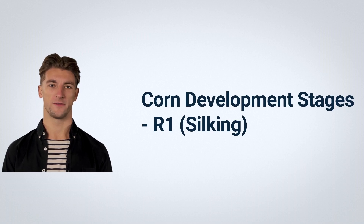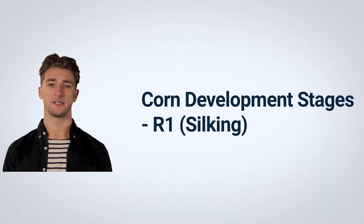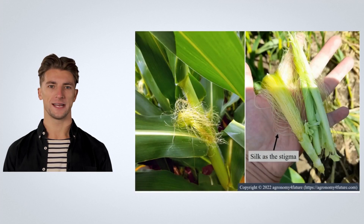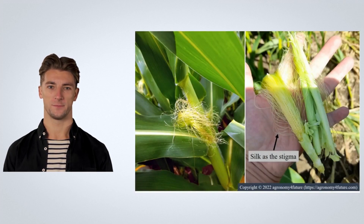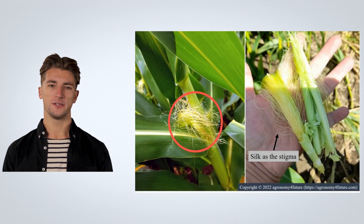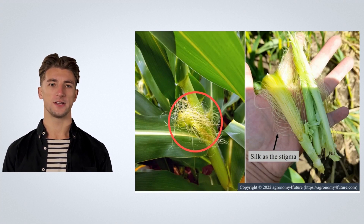Hello, welcome to Agronomy for Future. Today I'll talk about corn development stage R1, which is also called silking stage. In corn, R1 stage is one of the most critical periods to determine yield potential. The emergence of silk is regarded as the initiation of the reproductive period.